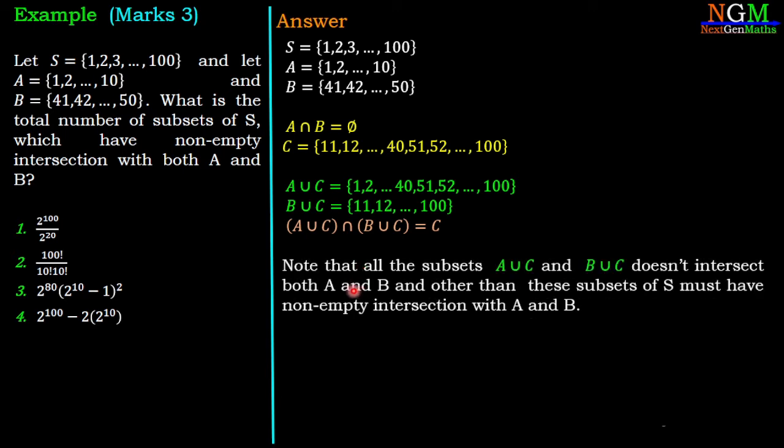Now, this is an important note. All the subsets of A union C and B union C do not intersect both A and B sets. Other than these subsets, that means all subsets of S other than subsets of A union C and B union C have non-empty intersection with A and B.